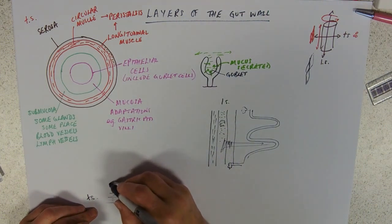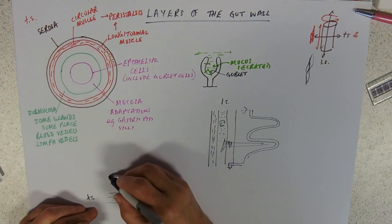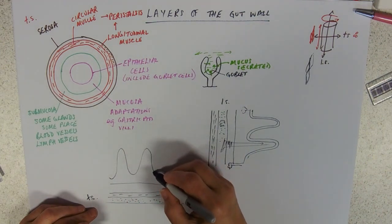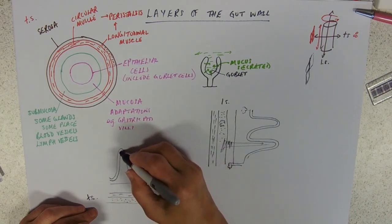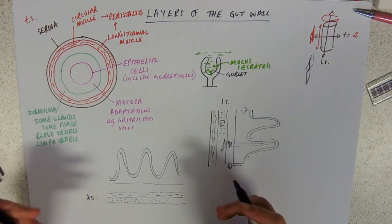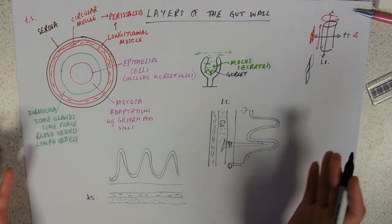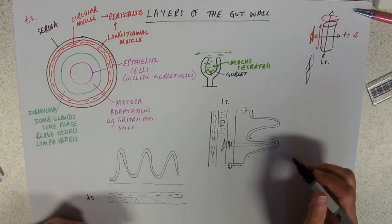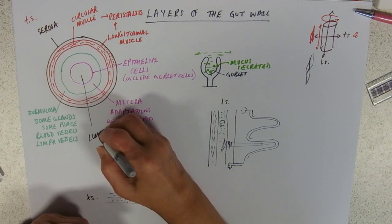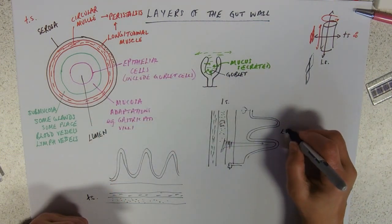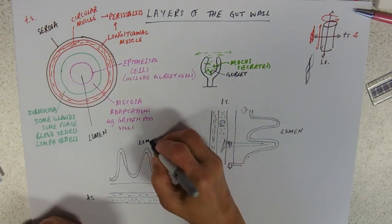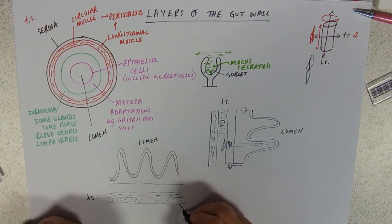You've then got your submucosa because it's got blood vessels in it, and then you'd have the mucosa. You need to know those layers of the gut, that's kind of the bottom line. Of course, the bit in the middle, let's not forget that, that's called the lumen because it's the hole down the middle. Here would be the lumen, and here would be the lumen, and this is the outside serosa.